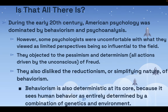During the early 20th century, American psychology was dominated by behaviorism and psychoanalysis. However, some psychologists were uncomfortable with these limited perspectives. They objected to the pessimism and determinism — all actions driven by the unconscious — of Freud, and disliked the reductionism of behaviorism. Behaviorism is also deterministic at its core because it sees human behavior as entirely determined by a combination of genetics and environment. Freud, Watson, and Skinner all felt that people needed to be controlled.